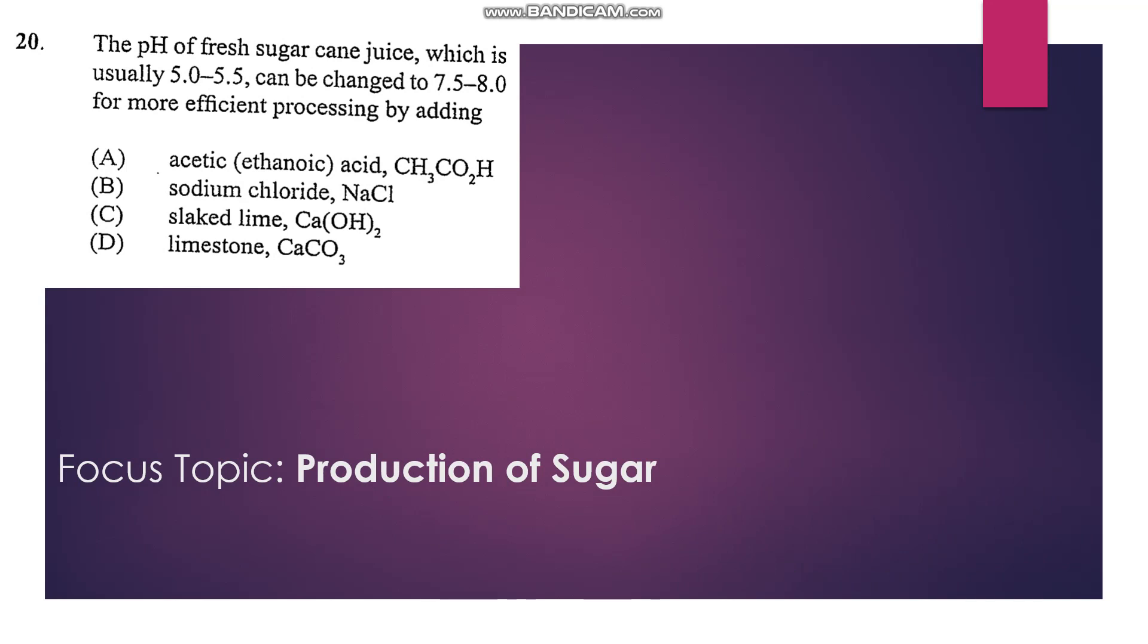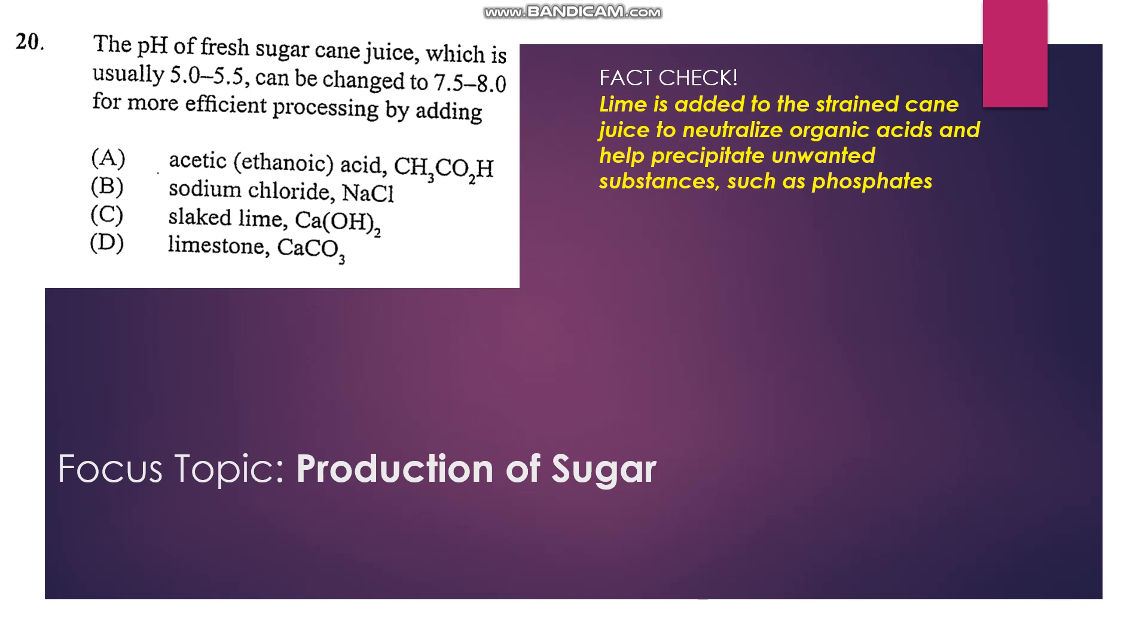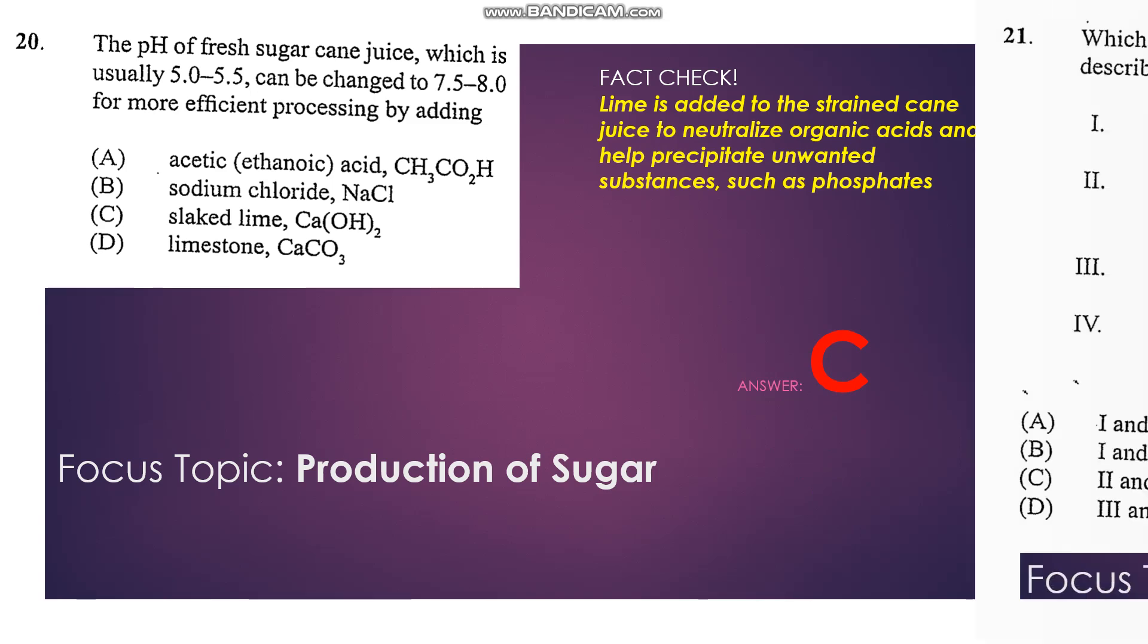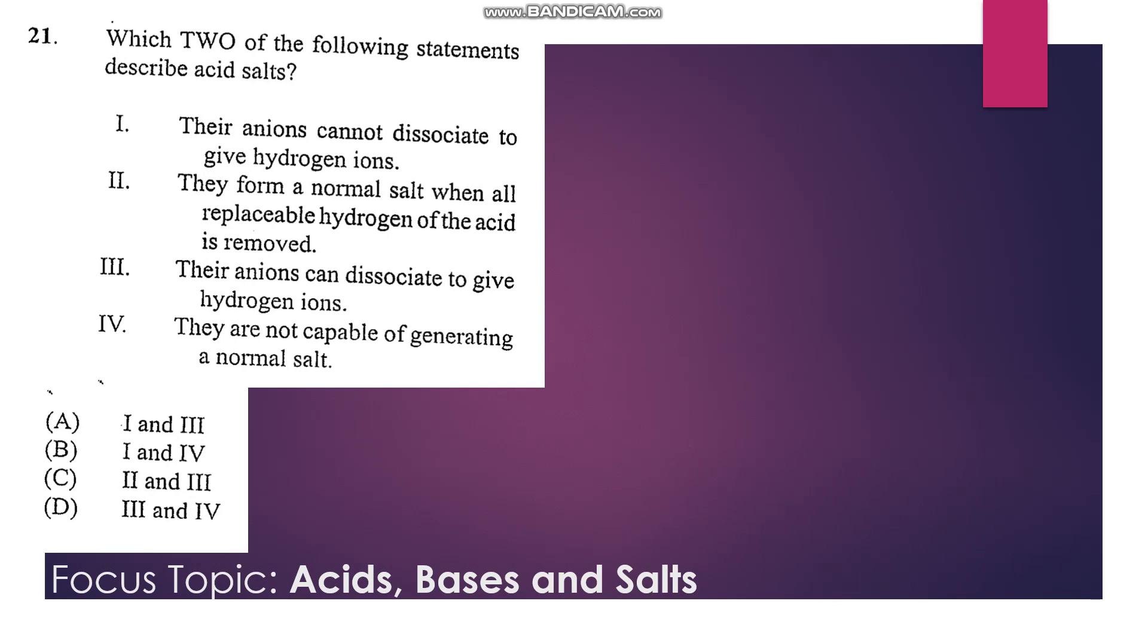Number 20: The pH of fresh hurricane juice, which is usually 5.0 to 5.5, can be changed to 7.5 to 8.0 for more efficient processing by adding... So looking for a substance that can increase the pH, and that means to make it more alkaline and less acidic, so we would be looking at calcium hydroxide. So C is our answer.